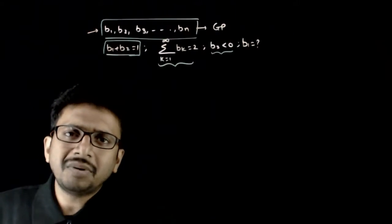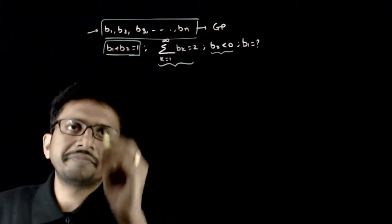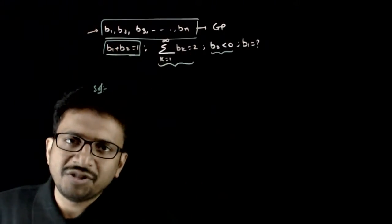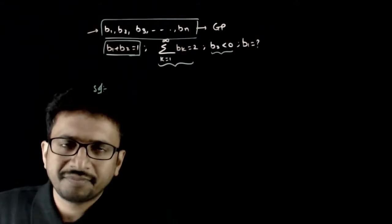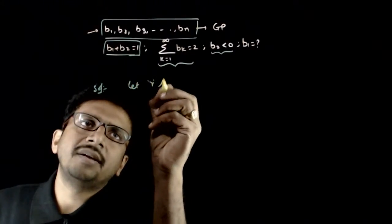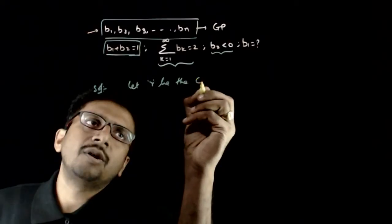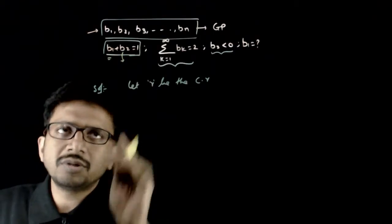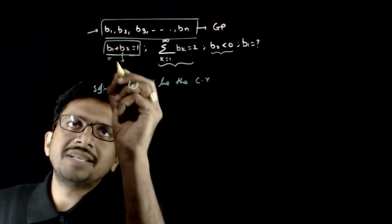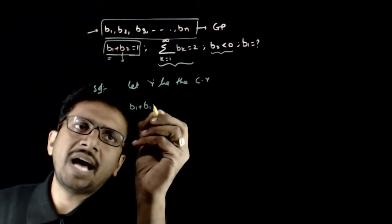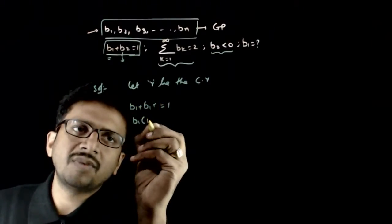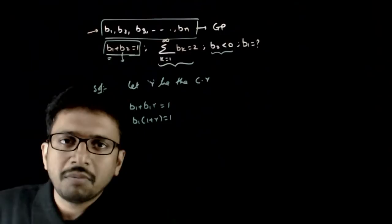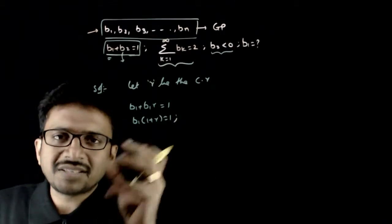Let us express the given information in terms of equations. It is given that b1, b2, b3 and so on up to bn are in GP. Let r be the common ratio. So b2 becomes b1 times r. The first equation becomes b1 plus b1·r equals 1, that is b1 times (1 plus r) equals 1.